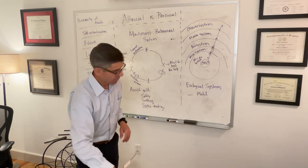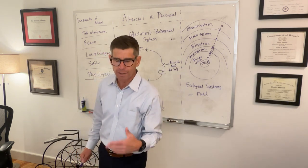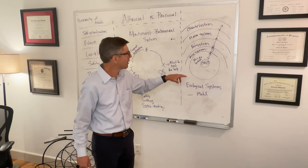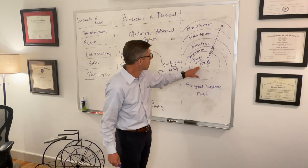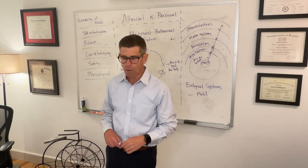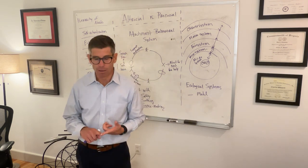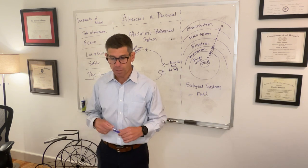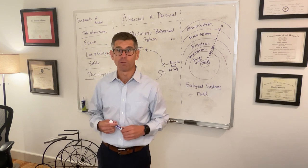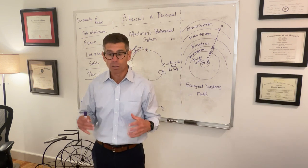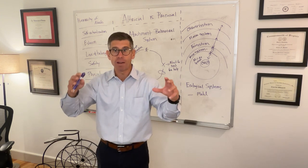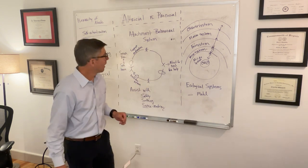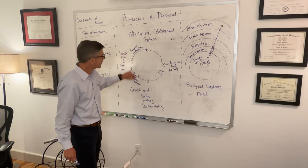In the center of Bronfenbrenner's model you have the child. The first concentric circle outside the child is the microsystem. In this microsystem are influences like family, school, peer relationships, neighborhood environments like the playground, religious organizations, health services, and preschool or daycare environments. These are all social experiences that will have an effect on the child's development — physical, emotional, and relational — and can influence how the attachment circle operates as well.